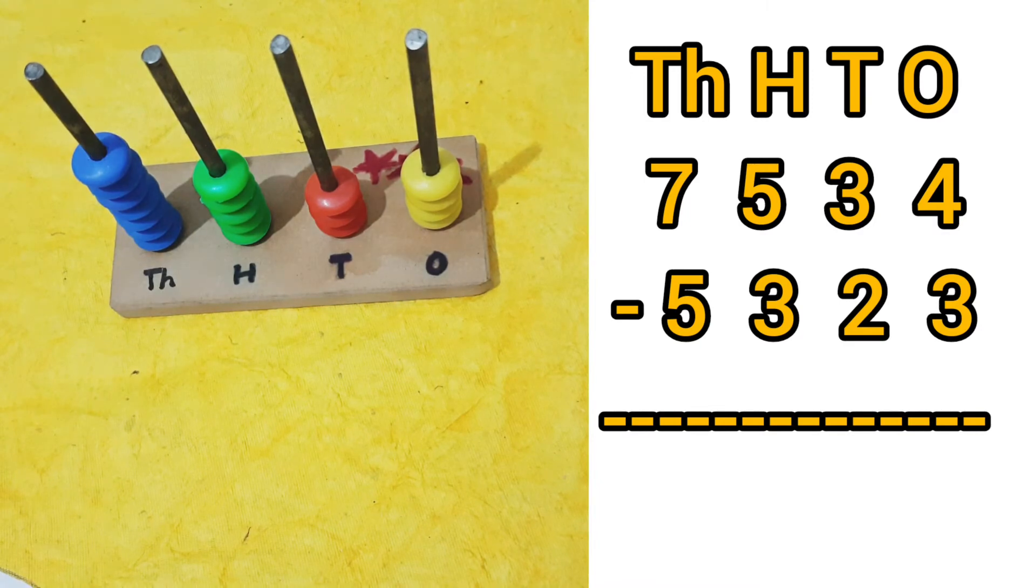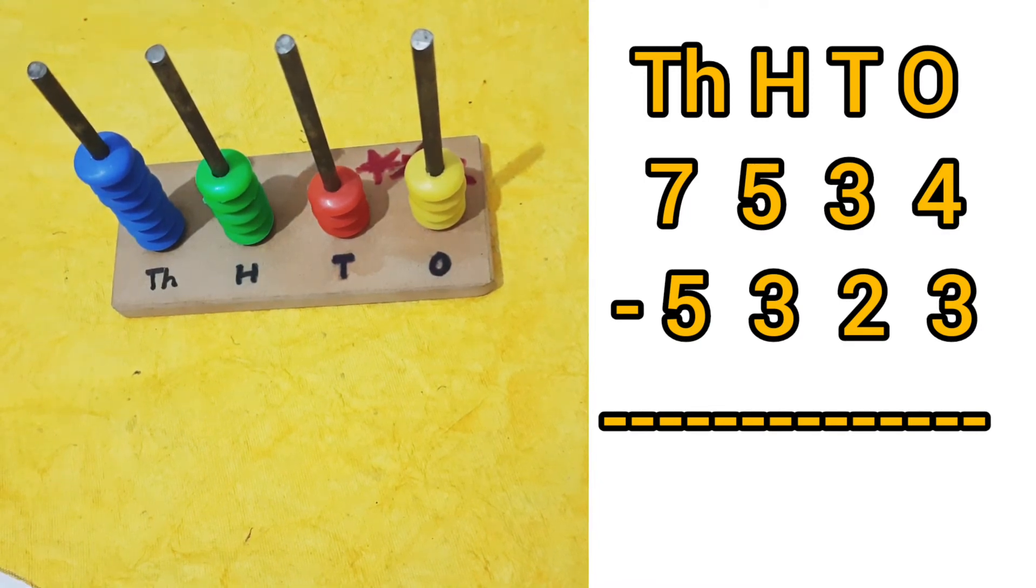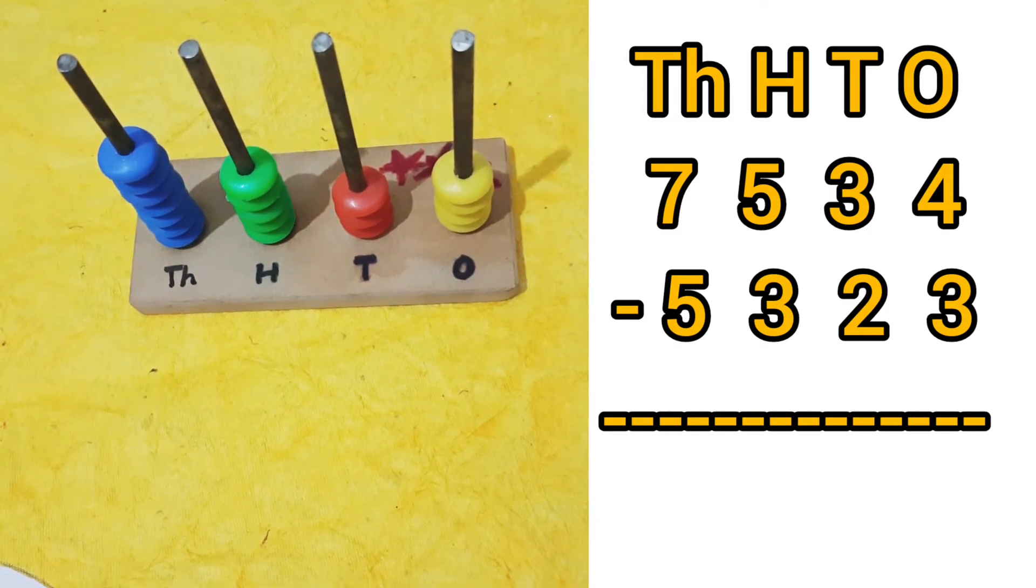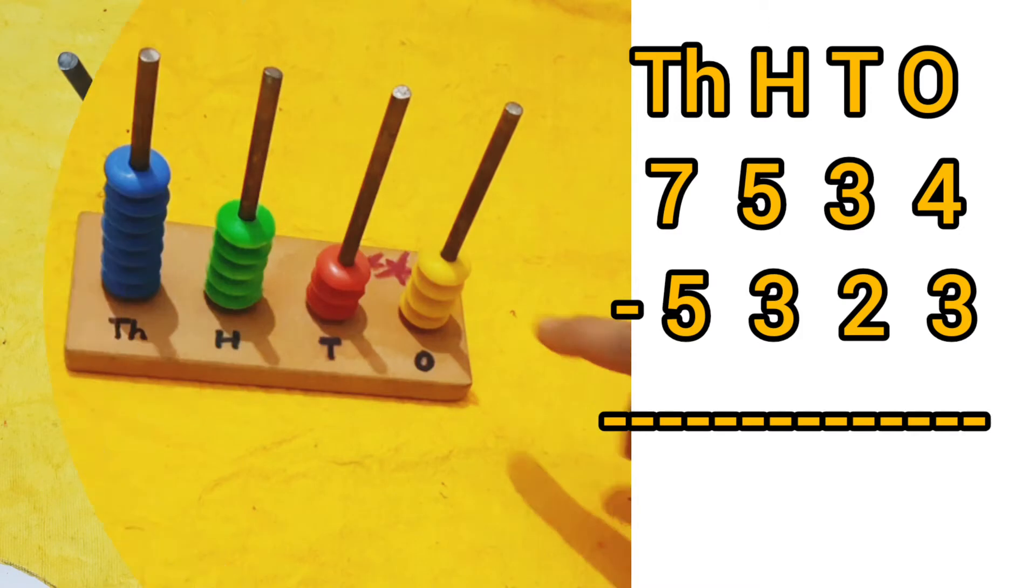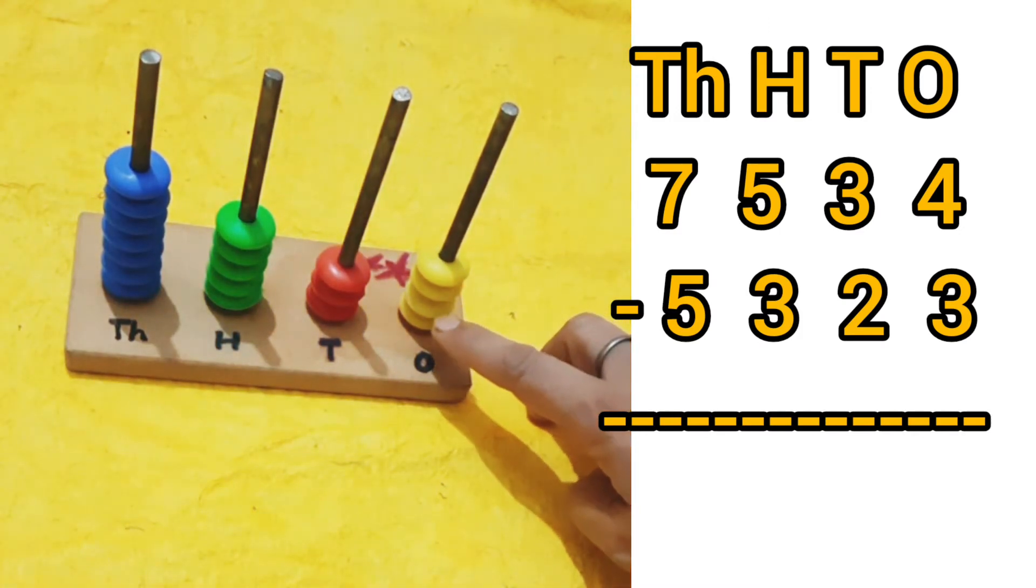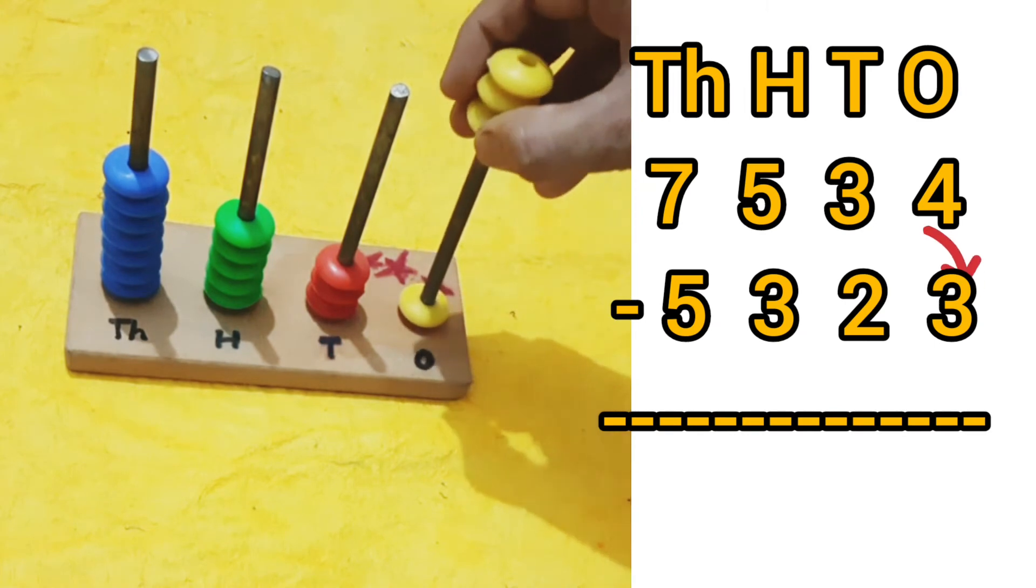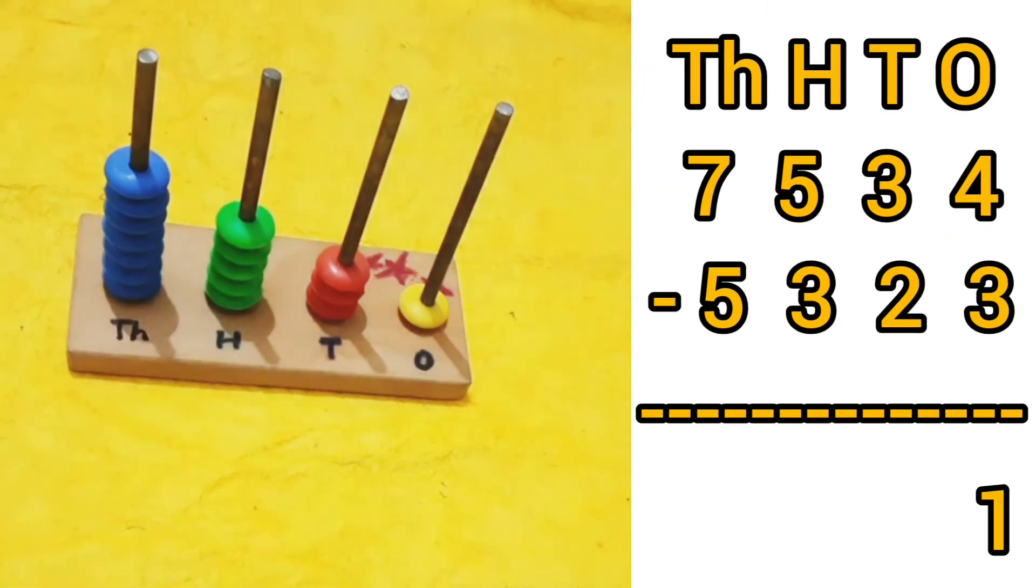Now let's subtract 5323. Subtraction means taking away, so we will remove three yellow color beads from the ones place. That means four minus three is equal to one, as one bead is left at the ones place.